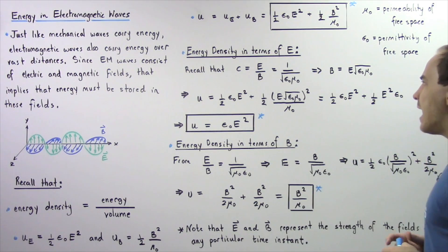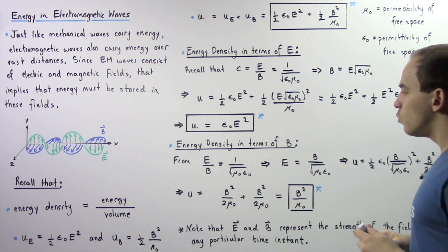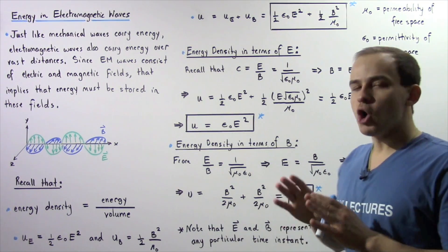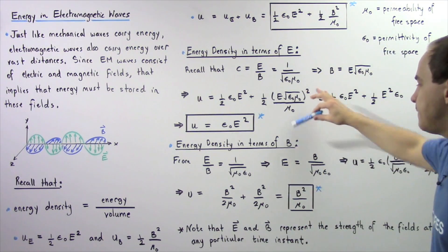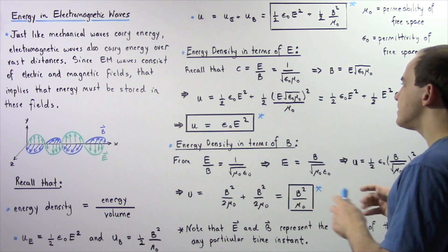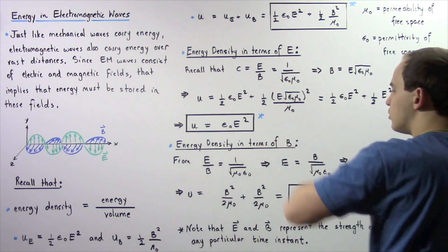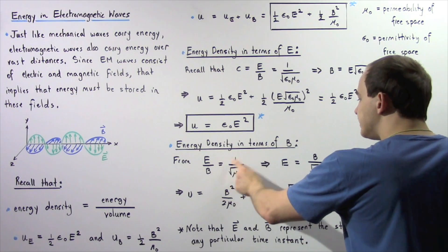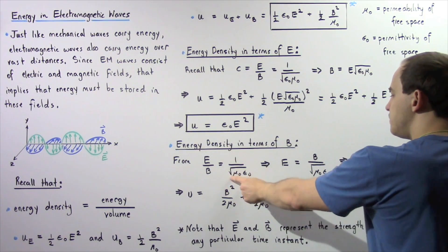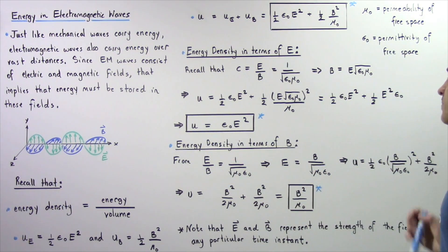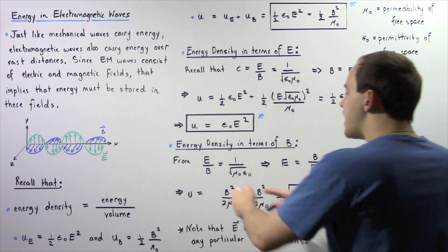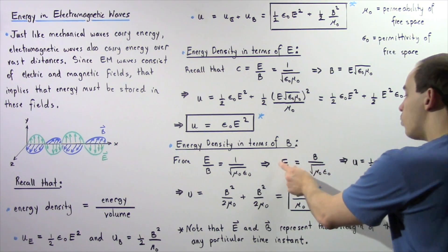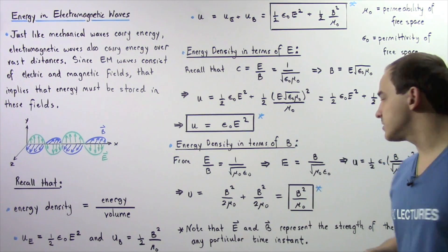Following a similar procedure, we can also determine the equation for energy density only in terms of the magnetic field B. We begin again with the relation E divided by B equals 1 divided by the square root of mu naught times epsilon naught. Now, instead of expressing B in terms of E, we express E in terms of B.